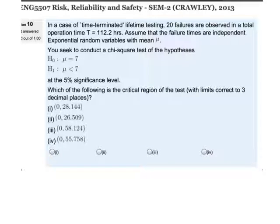We're looking for a 5% significance level. Before we go to the table, if you look at equation number 78 for the chi-square test, you'll see that for a time-terminated region we need degrees of freedom 2 times r plus 1.